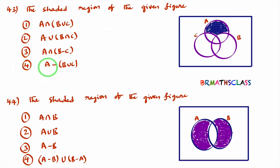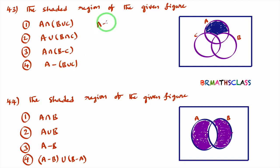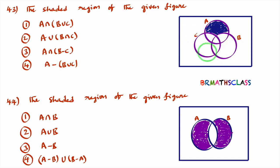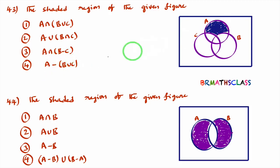Now observe the options — which option gives the meaning 'only A'? See the fourth option: A minus (B union C). What does A minus (B union C) mean? It means A but not (B union C). We know A minus B means A but not B. So A minus (B union C) means A but not B union C — whatever B and C together form is B union C, and we exclude that. This gives the clear meaning of only A. So the fourth option is the right option.